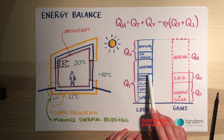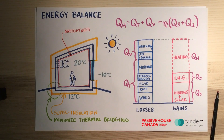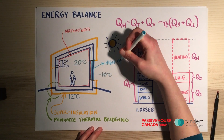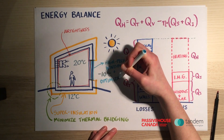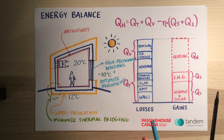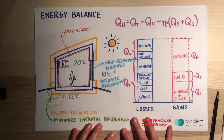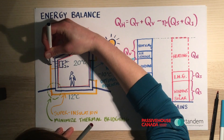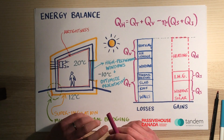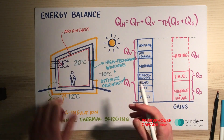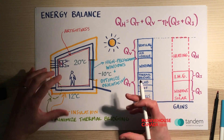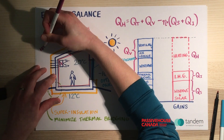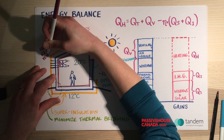We will pick high-performance windows and optimize their solar orientation — triple glazed, with a good insulated frame and a good installation detail. And lastly, when it comes to our ventilation system, we're going to pick a system that includes heat recovery, so that the warm air being evacuated from the building preheats the fresh air coming in. We're not cross-contaminating, but we are exchanging heat to reduce the ventilation losses.